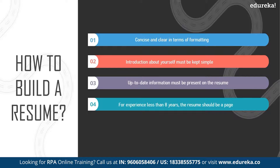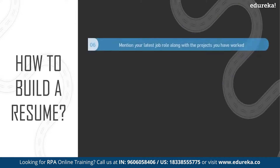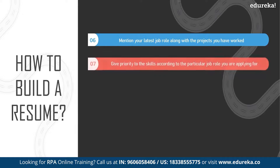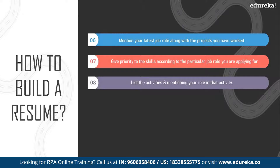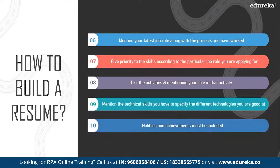Professionals with two-plus years of experience should opt for a functional resume since they're looking for a change — mention projects related to the job role you're applying for. If you're an experienced professional, mention your latest job role along with projects from previous organizations. If you're a fresher, justify your role in the projects you mention, give priority to skills relevant to the role, and list activities with your specific contributions. Finally, mention your technical skills, hobbies, and achievements, as these add extra value.